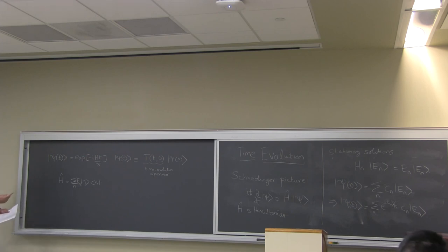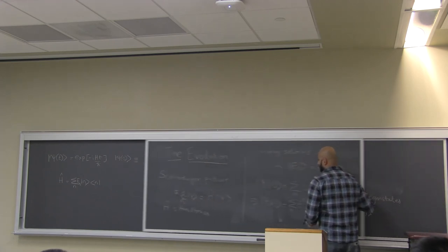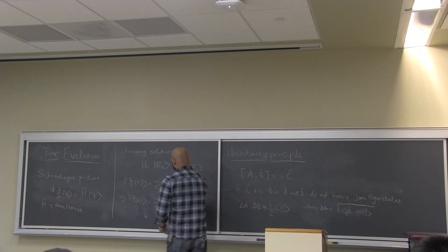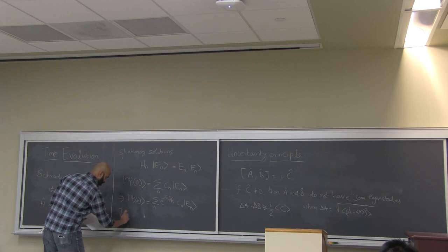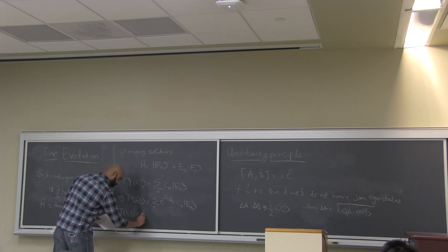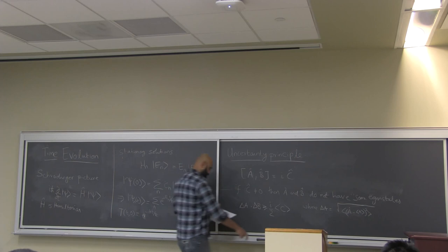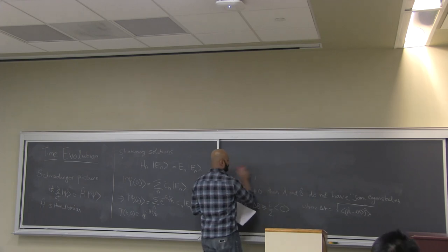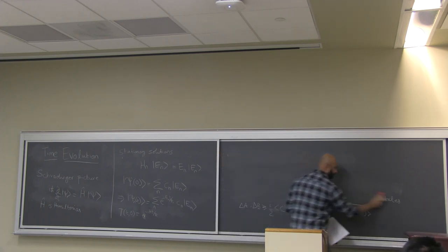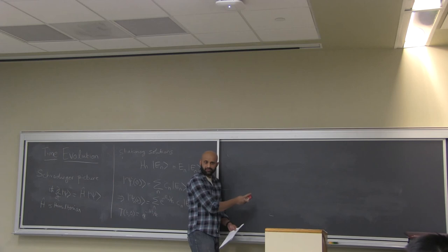Now we have introduced the Schrödinger picture of time evolution, where we have written down the time evolution operator U(t, 0) = e^{-iĤt/ℏ}. I want now to introduce some other pictures of time evolution — the Heisenberg picture and the interaction picture — which you've probably seen in quantum mechanics.